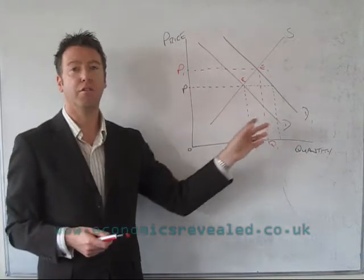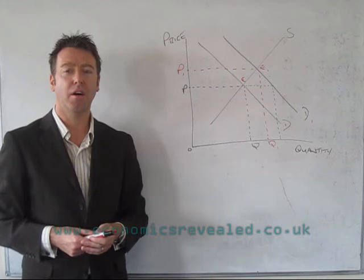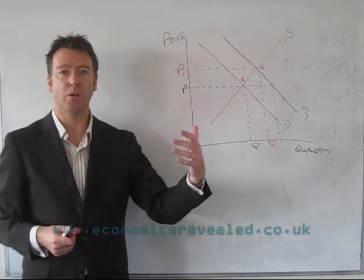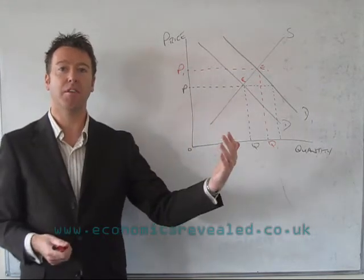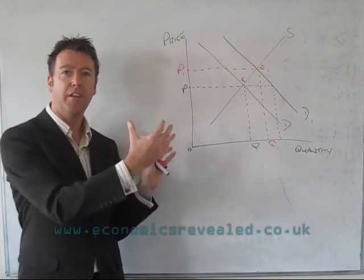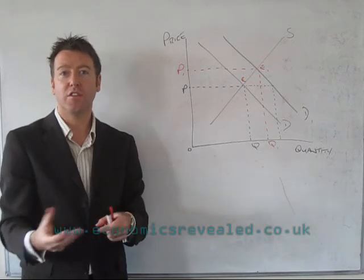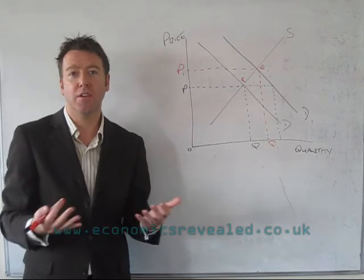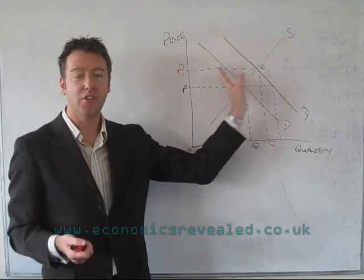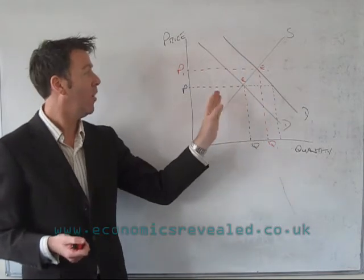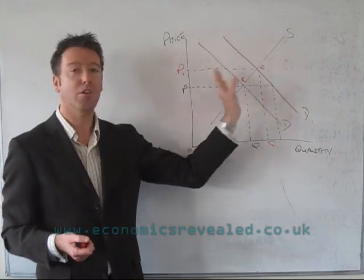Also the price of substitutes can make a difference. So if this was supply and demand for butter, and the price of margarine or some kind of low-fat spread went up in price, people may switch from that low-fat spread to butter. The extent to which they switch is dependent on the product, and demand curves can shift a little bit or a long way — so there's no hard and fast rule for how far you do this shift.